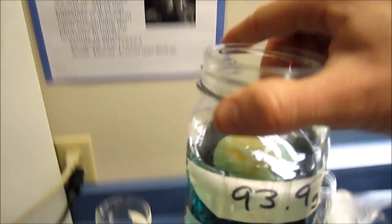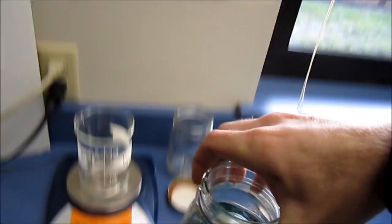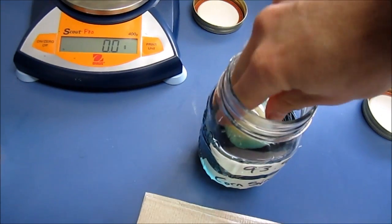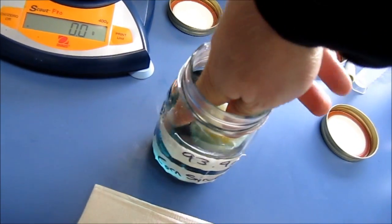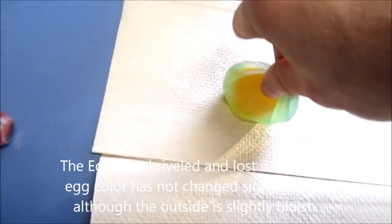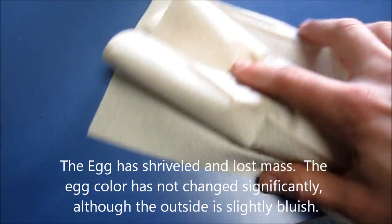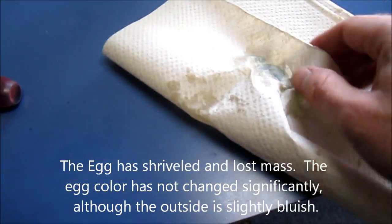Now it's a day later. Let's take a look at our egg that has been soaking in corn syrup for 24 hours. When we pull the egg out, very gently of course, we notice the egg is pretty flaccid. It's shriveled enormously.